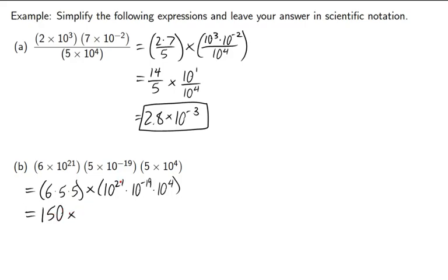Anyway, we get 25 times 6, which is 150. And now let's just add these exponents together. 21 plus negative 19 is 2. 2 plus 4 is 6. Great. Here's the problem with this answer, though. Now, this one is not in scientific notation.